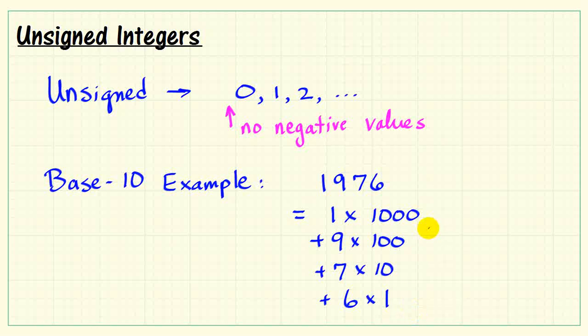We note that 1,000 can be written as 10 to the 3rd power, 100 is 10 squared, 10 is 10 to the 1, and 1 is 10 raised to the 0 exponent.